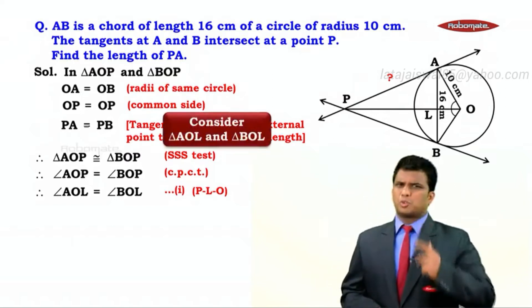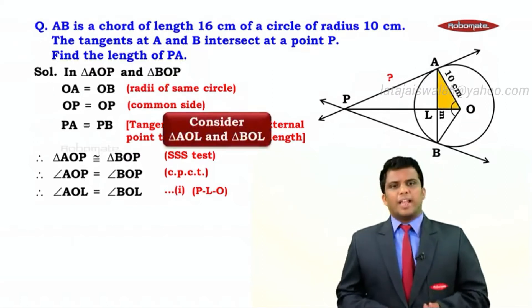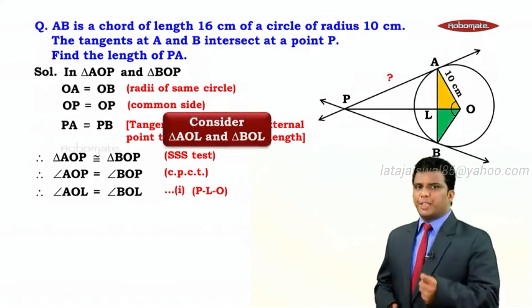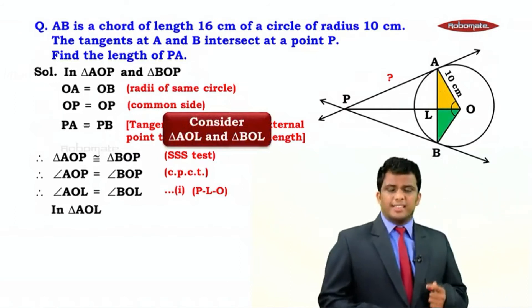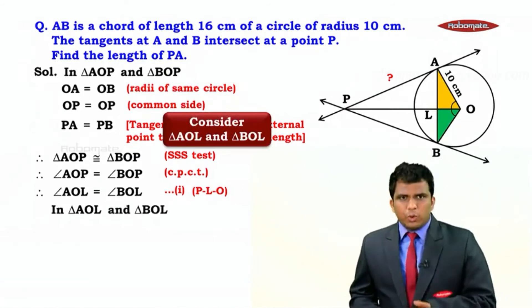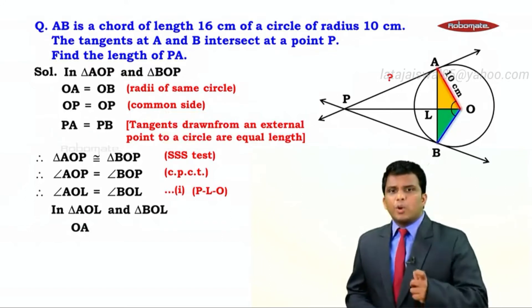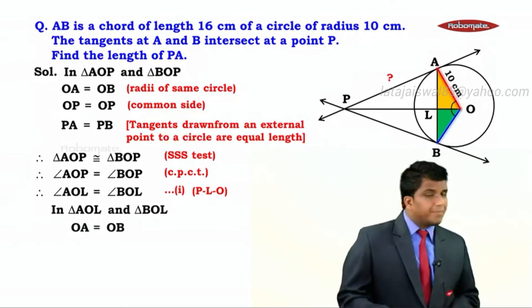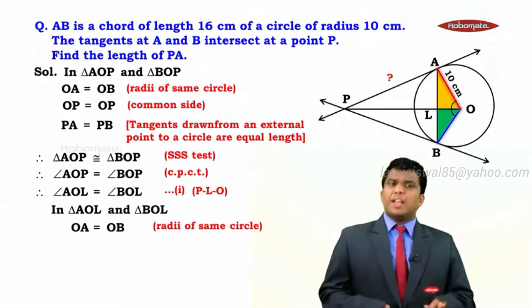Now, how do we benefit? Look at these two triangles, triangle AOL and triangle BOL. In triangles AOL and BOL, we know AO equals OB. The reason is they are radii of the same circle.